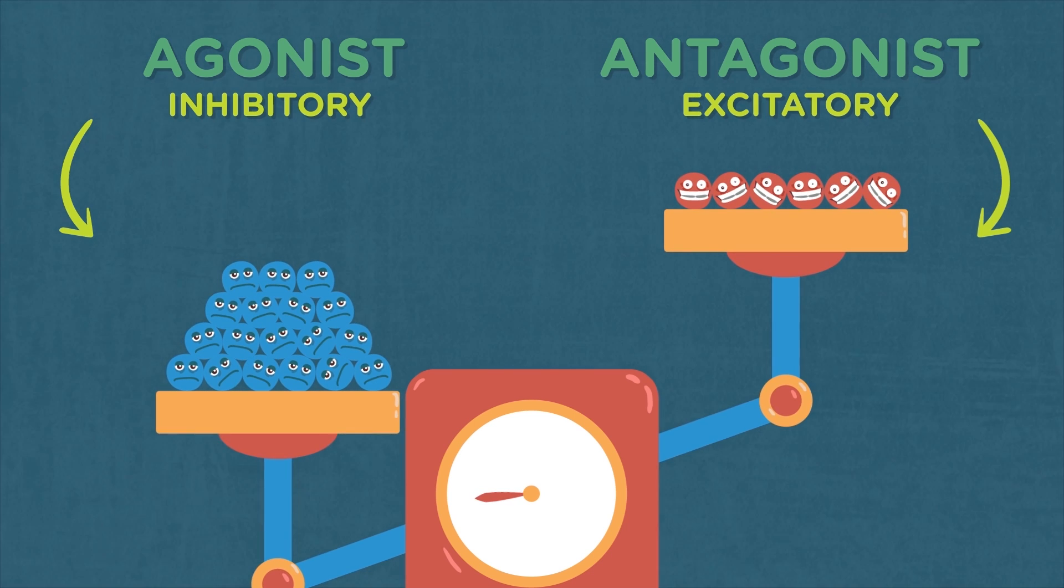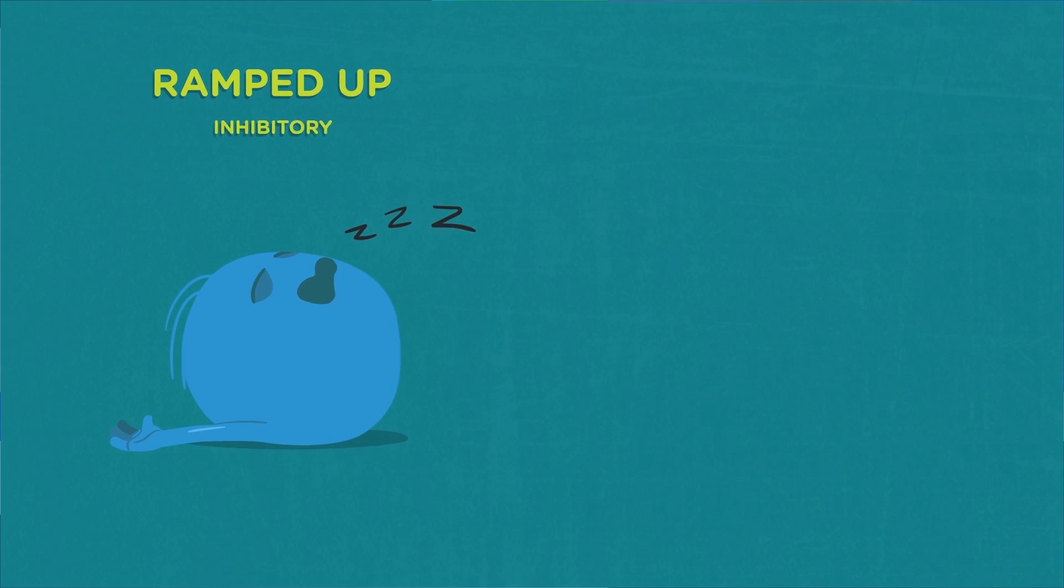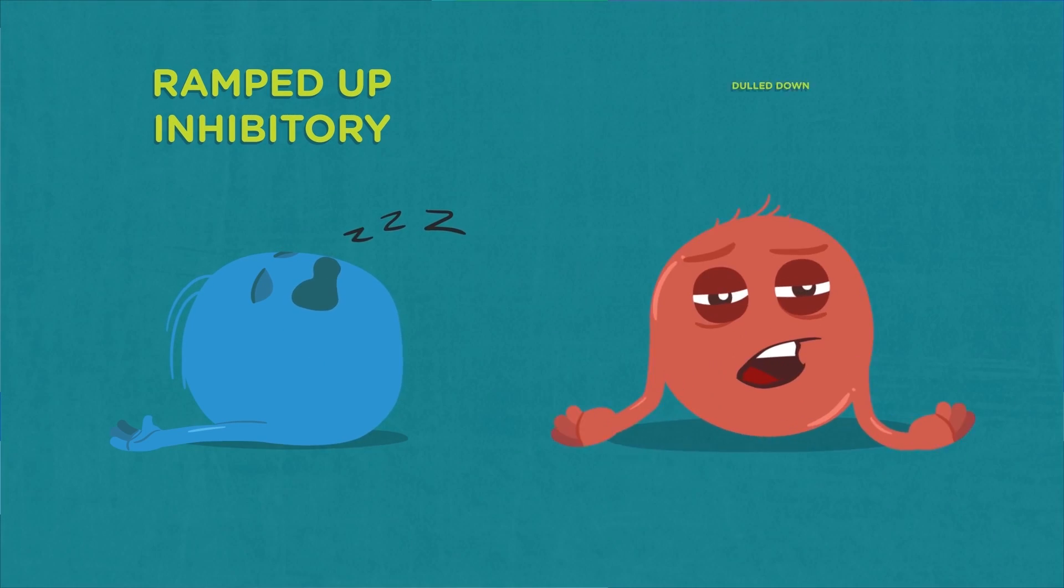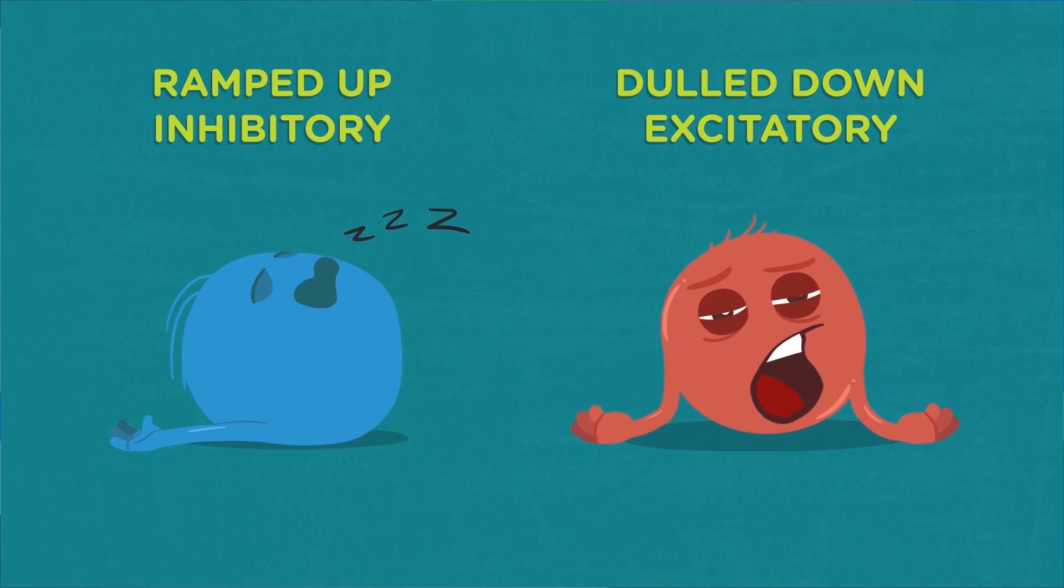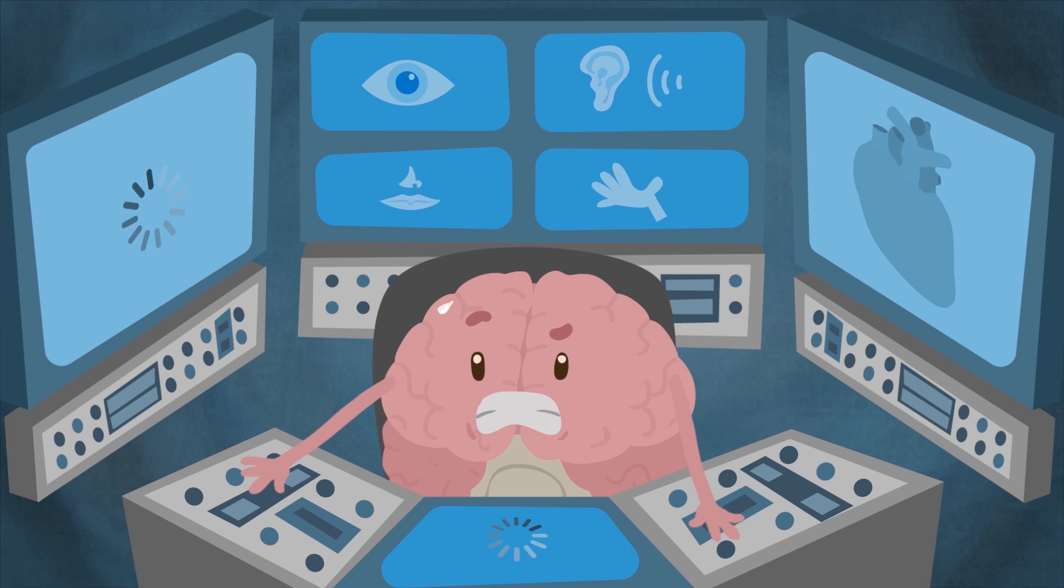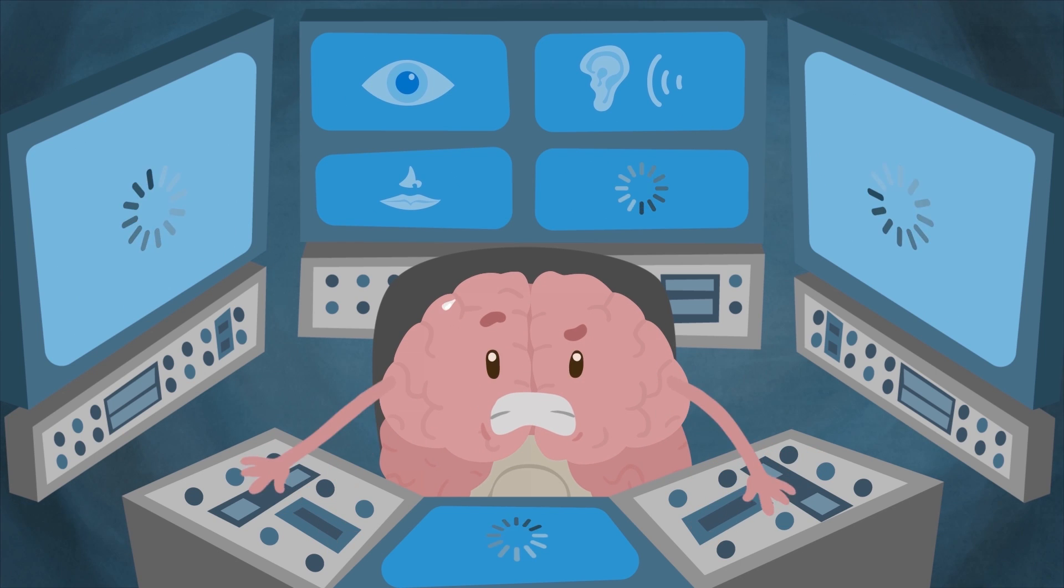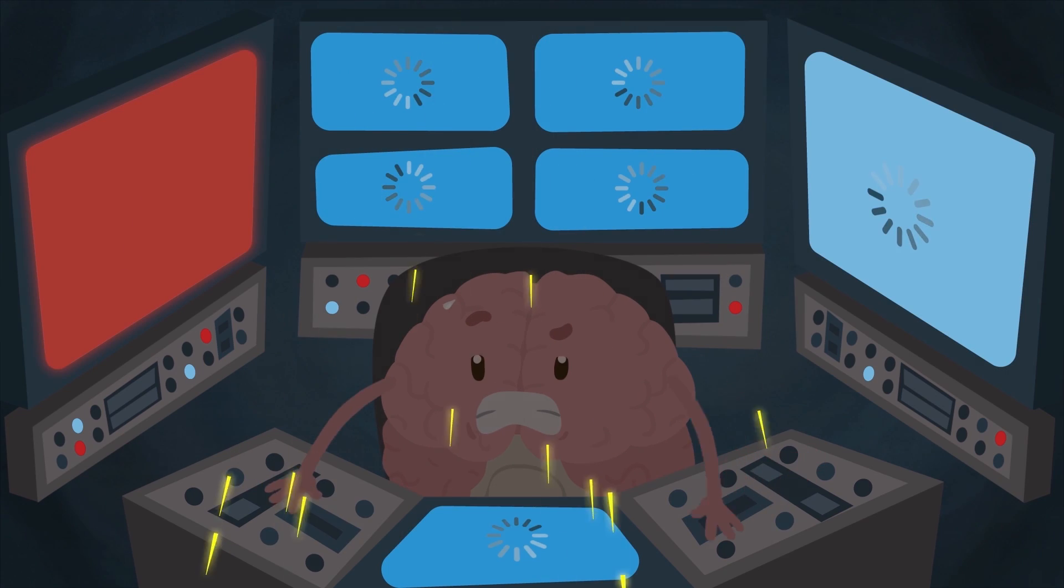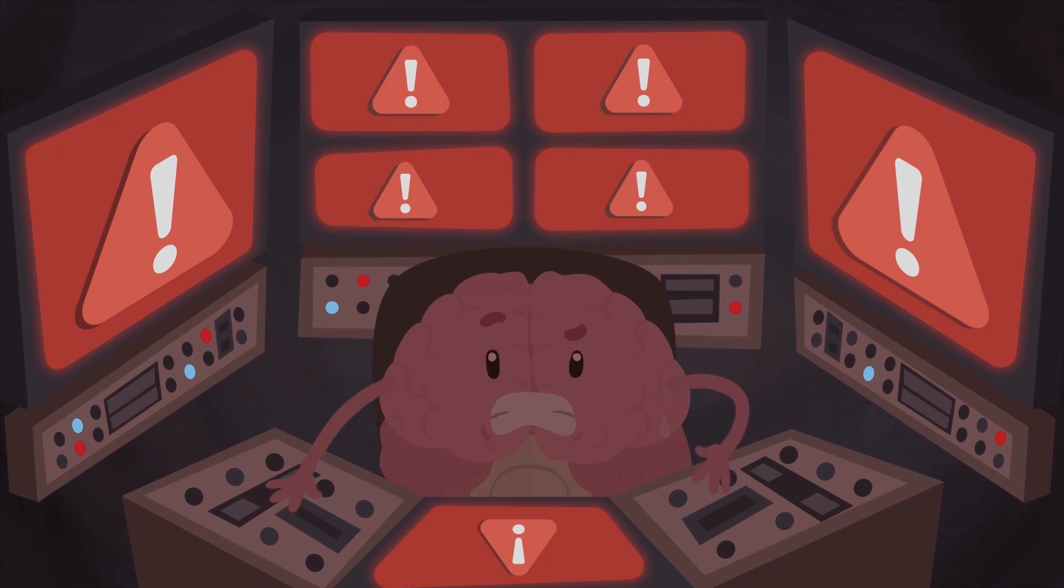You can probably guess what happens when you combine ramped-up inhibitory neurotransmitters with dulled-down excitatory neurotransmitters. All of your brain's different parts and functions become super slowed down, which can cause a wide range of physical, mental, and emotional effects.